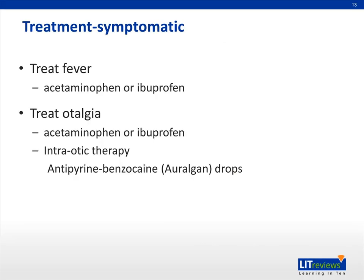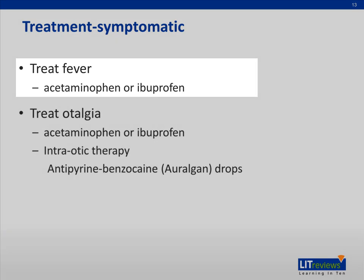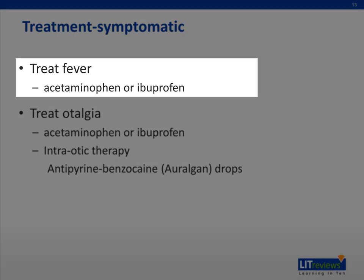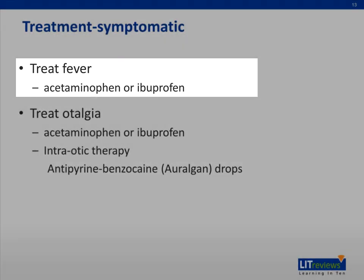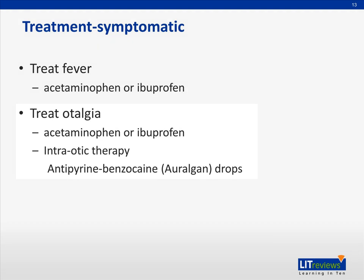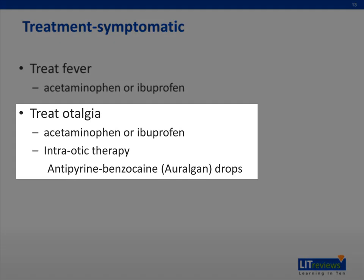Arguably the most important treatment for AOM in most children is symptomatic treatment. Fever can be treated with ibuprofen or acetaminophen. Otalgia can be treated with either of these or with topical antipyrine benzocaine drops.